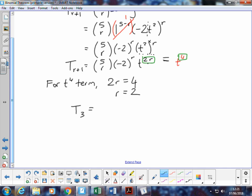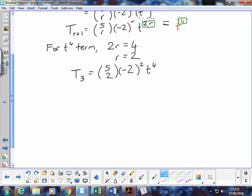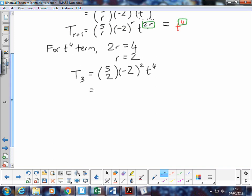The third term in the expansion is 5 choose 2 times negative 2 squared multiplied by t to the power 2 lots of 2 is 4, confirming that we're actually on the right track here.